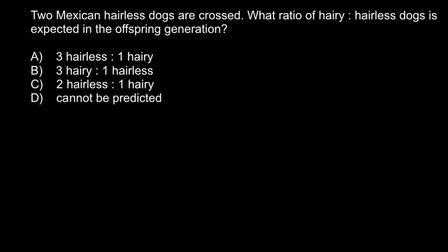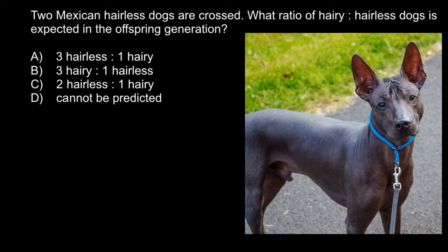First, I want to show you a photo of this dog — as you can see, it's a hairless dog. Who can pronounce the name of this dog? It has Aztec origin, so it's not easy to pronounce, and many people just use the first letters to call it. The correct pronunciation is Xoloitzcuintli — not Zolo or Xolo, but Sholo-itz-quintly. Most people just call it Sholo.